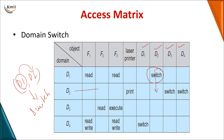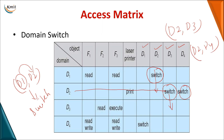Similarly, at the intersection D2 comma D3 with switch, a process presently in D2 can be switched to D3. At D2 comma D4, a process executing in D2 can be switched to D4. At the intersection D4 and D1, a process executing in D4 can be switched to D1. So domain switch indicates how a process can be moved from one domain to another, depending on the keyword switch.